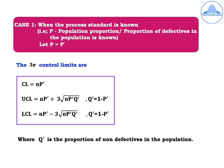Starting with case 1 when the process standard is known, that is capital P which is the population proportion of defectives in the population is known or given. Let us assume that the population proportion P equals some P-prime. Then the 3-sigma control limits are CL equals NP-prime, UCL equals NP-prime plus 3 times root NP-prime Q-prime, where Q-prime equals 1 minus P-prime.